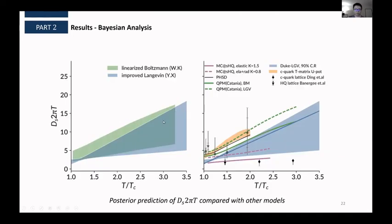And again, we can compare our posterior distribution of ds2πt with other calculations. So on the left-hand side, we are comparing to another Bayesian analysis extraction of this ds2πt, but using a different transport approach, the linear Boltzmann approach, done by another former group member at Duke, Wei Chen. And on the right, you can see our comparisons with other model calculations and lattice. So I think the results are a little spread near T_c, but I think most of them are around a fixed value five, which I'll be using in later calculations.